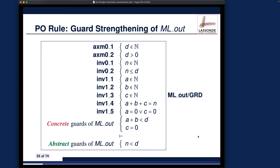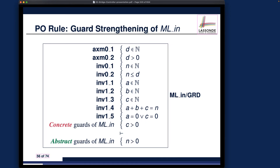The number of proof obligations you have to formulate related to guard strengthening depends on how many abstract guards you have. Luckily, for both ml_out and ml_in, each of them in the abstract version — in the initial model — we only have one guard constraint. So in total we have two: this was the first one, and this is the second one.